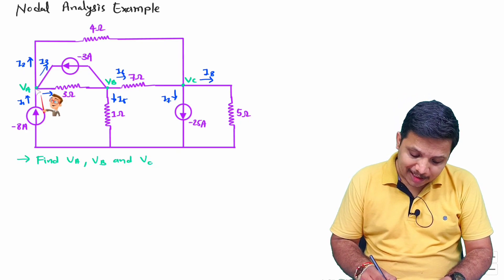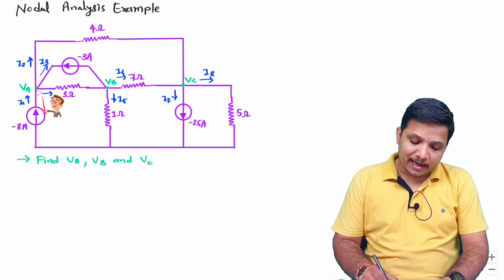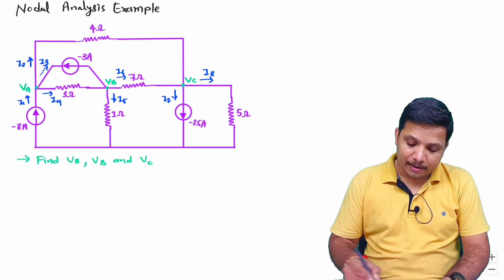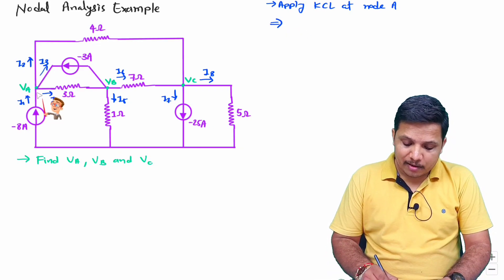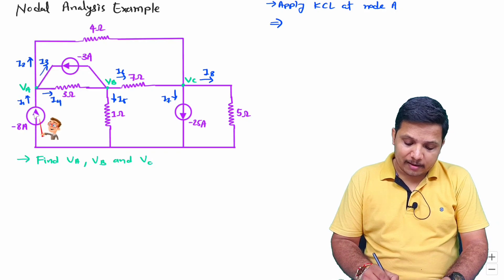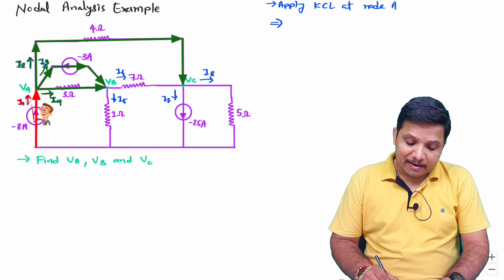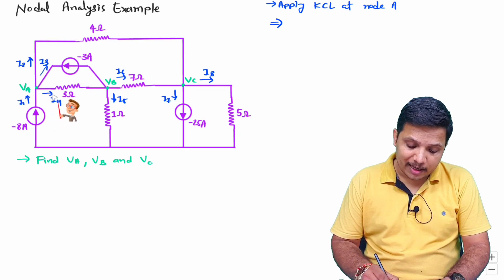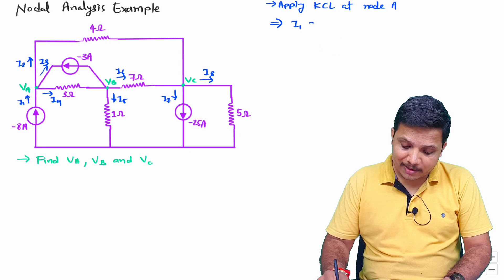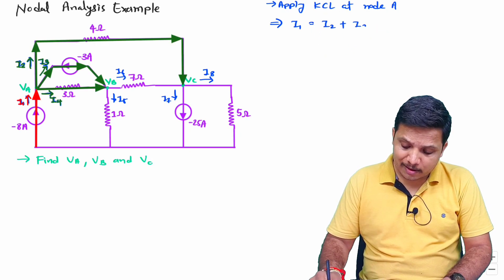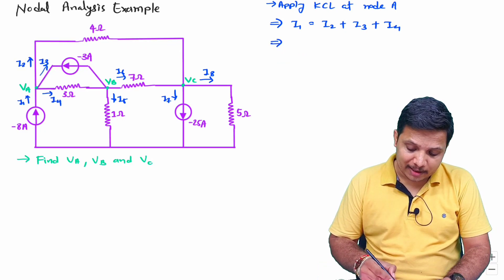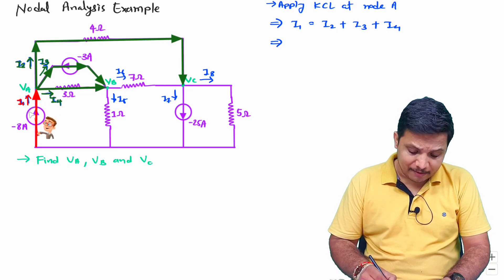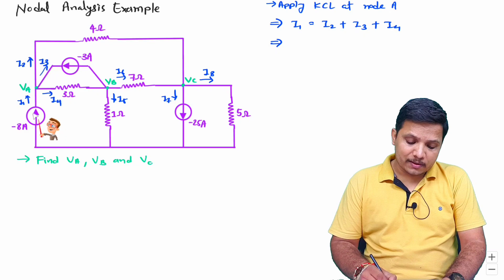Now let us apply nodal analysis at terminal A. Applying KCL at node A, entering current equals leaving current. Entering current is I1, and leaving currents are I2, I3, and I4. So I1 equals I2 plus I3 plus I4. Now substituting: I1 is in the direction of the current source, so I1 equals minus 8 amperes.